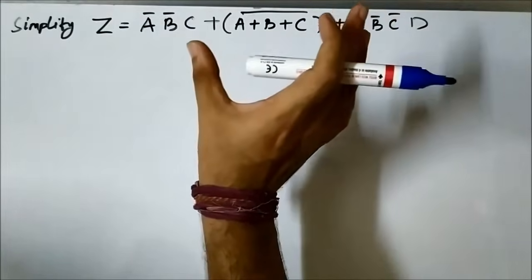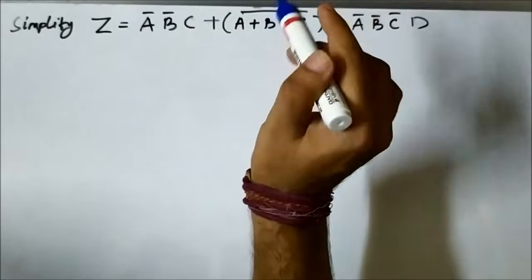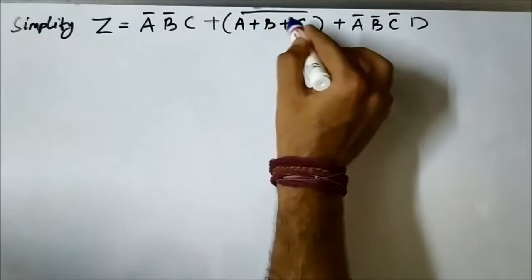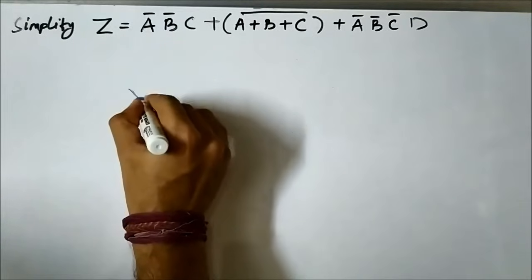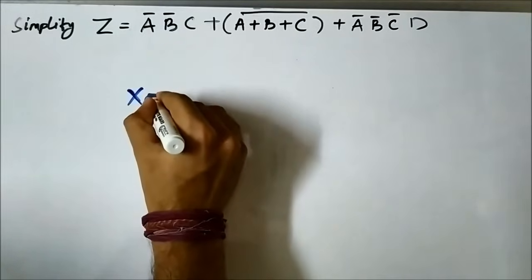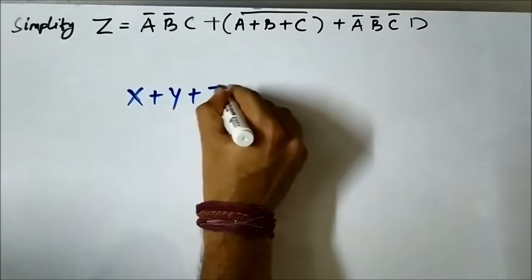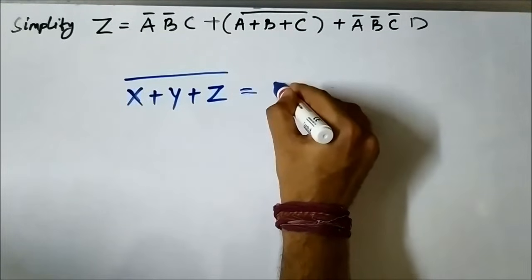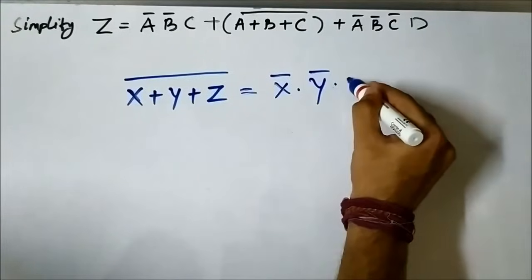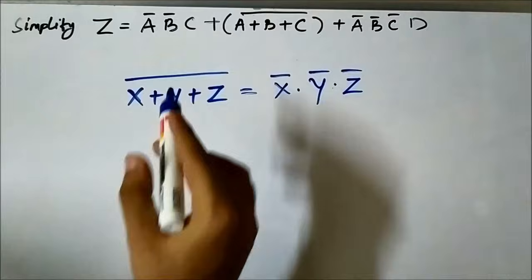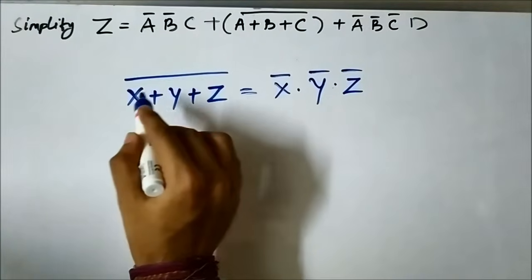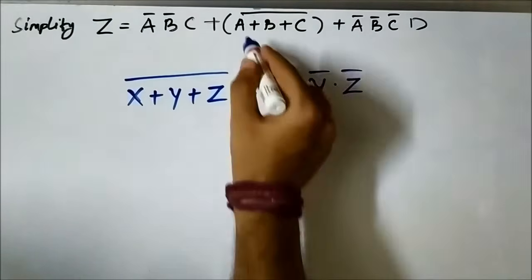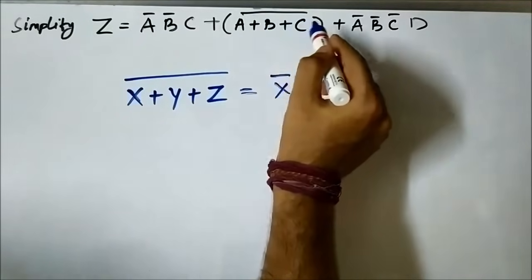In order to make the simplification process easier, we need to also convert this OR term into AND form. So we will use De Morgan's theorem. De Morgan's theorem states that (x + y + z)̄ equals x̄·ȳ·z̄. So here (a + b + c)̄ will become ā·b̄·c̄.